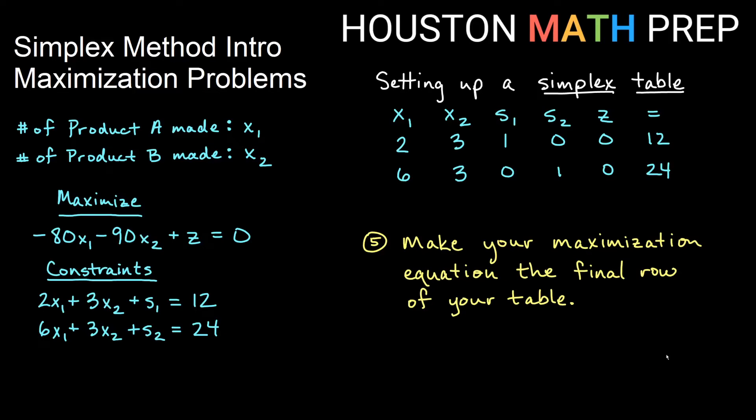We're then going to take the maximization equation that we have, what we're trying to maximize that we moved everything over equal to zero. And we're going to make that the final row of the table. So if we do the same thing and we plug everything into the table, you'll notice we only have x variables and a z variable in this one, right? So as we add that as a last row, we're going to have negative 80, negative 90. I won't have anything for my slacks, so those will both be zero. I have one z here, so I put a 1 there and then it's equal to zero. So zero goes in the bottom right corner.